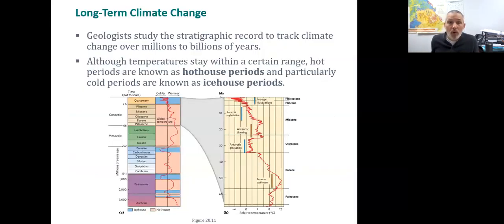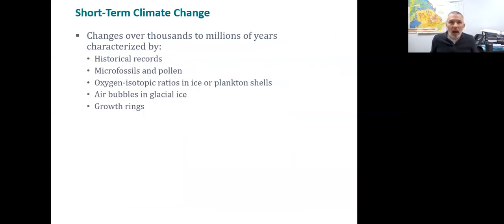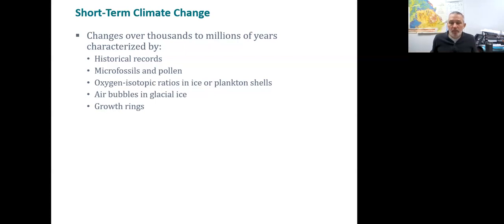Looking at long-term changes, we can look at rock records. We have had ice-house periods where rocks at the equator — confirmed using paleomagnetism — had glaciers at sea level. We also have periods with no glaciers on Earth whatsoever, known as hothouse periods. For short-term changes, we can look at pollen — we know different plants grow in different climates. If we have fossilized pollen or fossils, this can be very useful in figuring out what the climate was like.